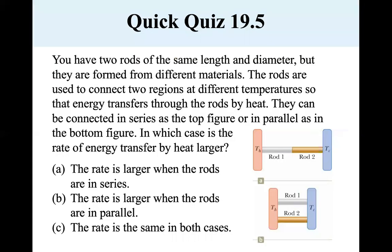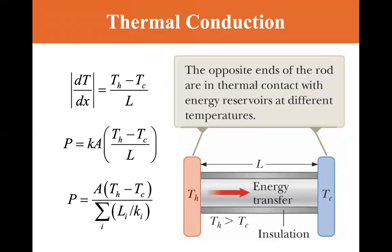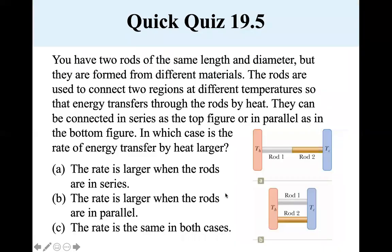Let's look at a little quiz. You have two rods of the same length and diameter but formed from different materials. The rods connect two regions at different temperatures so that energy transfers by heat. They can be connected in series — the top figure — or in parallel — the bottom figure. In which case is the rate of energy transfer larger? If they both have the same diameter, configuration B has basically doubled the area for transfer. Since area is directly proportional and length is inversely proportional in these equations, the parallel configuration gives a larger rate of transfer.